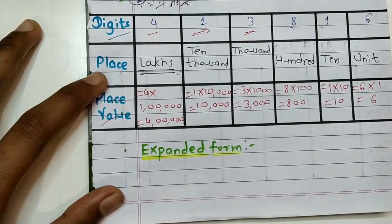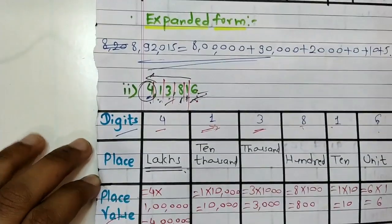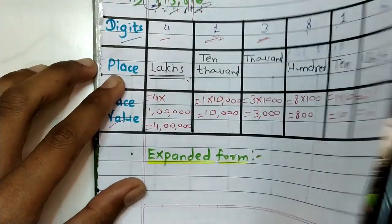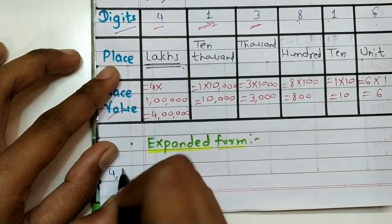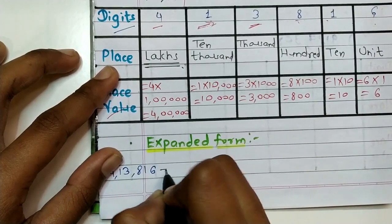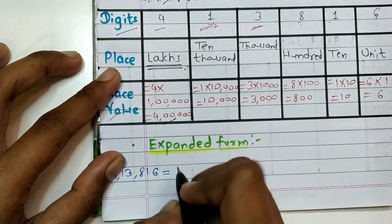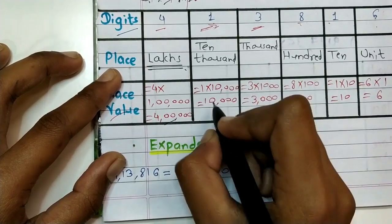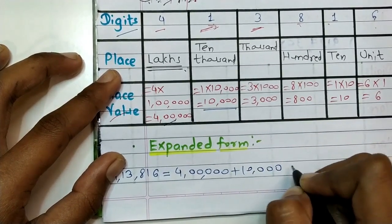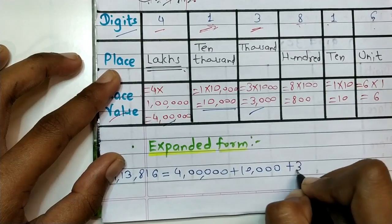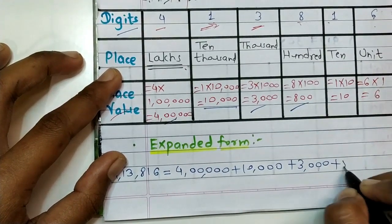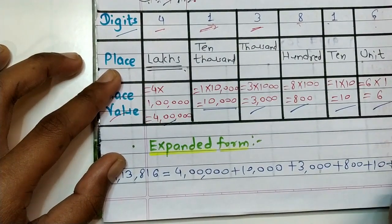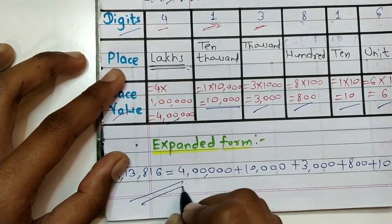Expanded form of 4,13,816: four lakhs plus ten thousand plus three thousand plus eight hundred plus ten plus six. This is our required answer.